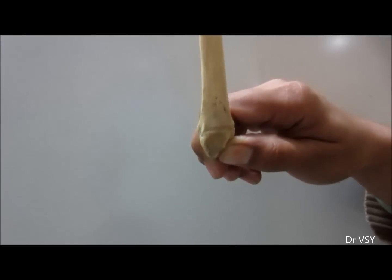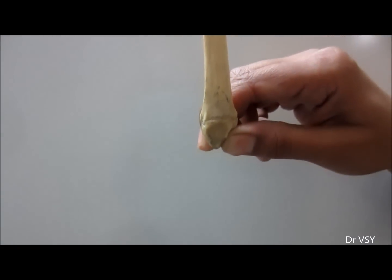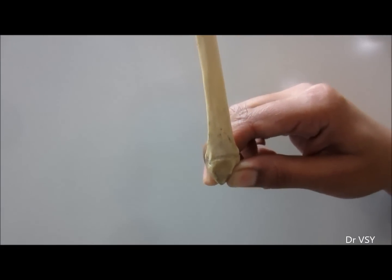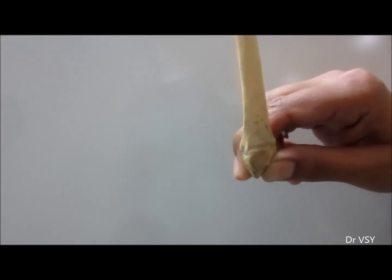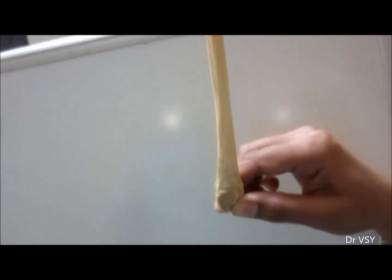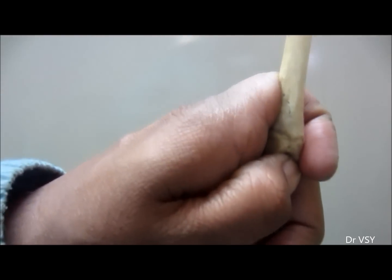The hand by which you can hold a fibula bone like this determines the side of the bone to which it belongs. For example, here since she is able to hold it by the right hand, that means this fibula is of the right leg. People may try to hold like this.